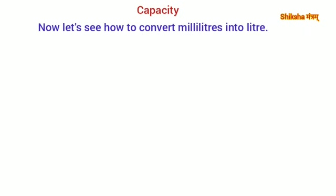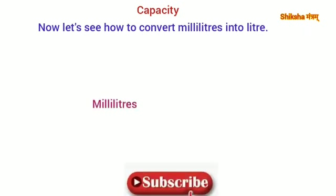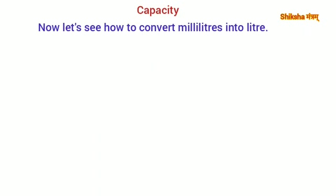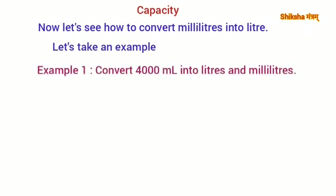Now let's see how to convert milliliters into liters. Milliliters is a smaller unit and liters is a bigger unit. To convert a smaller unit to a bigger unit, we use division. Let's take an example: convert 4,000 milliliters into liters and milliliters.